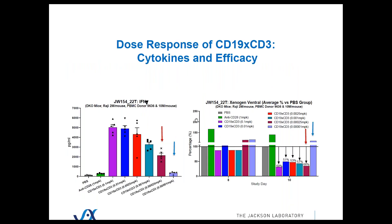Side-by-side comparison of the interferon gamma dose response to the efficacy you see. I just wanted to show you, in this individual, the sweet spot when it comes to dosing is that at 0.0025 mg per kg, we're getting good efficacy with less cytokine release than you see at higher concentrations. This is one individual.